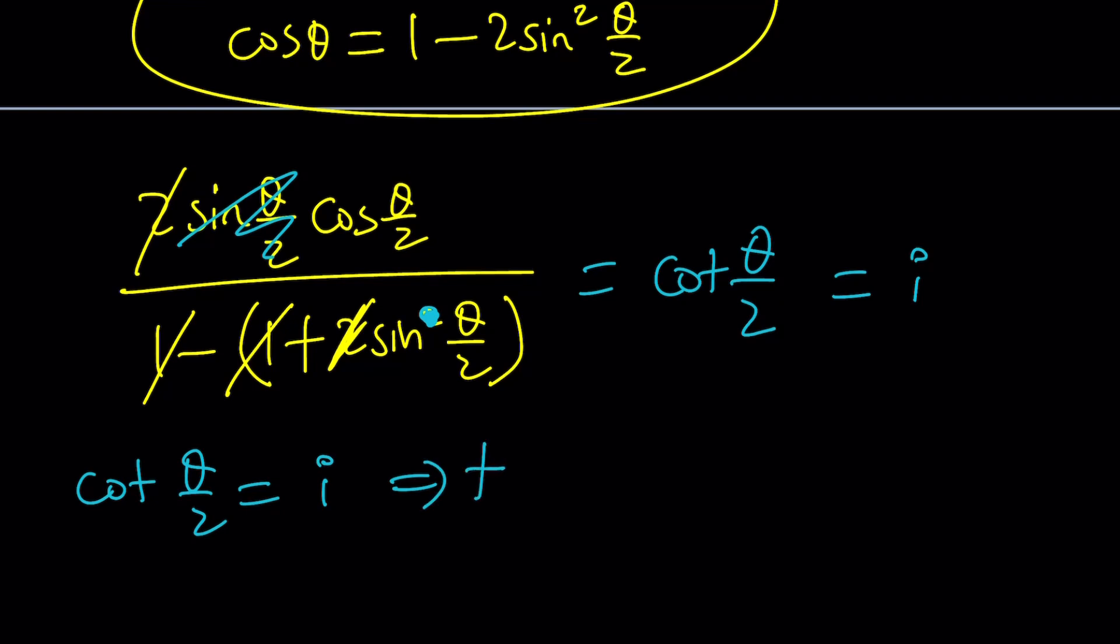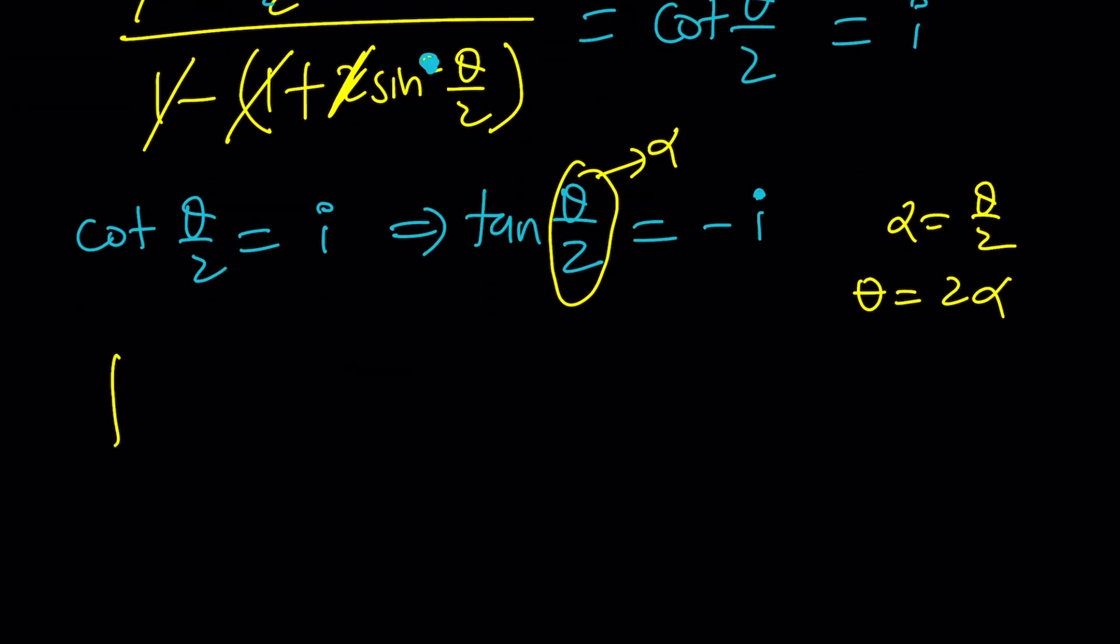Now, watch out. If cotangent is this, what is tangent? Tangent is the reciprocal, it's 1 over i. 1 over i is negative i, by the way. In case you didn't know, you can multiply by negative i. And here's at this point, we got something super interesting. I'm going to go ahead and call this something else, because I don't want to deal with half angles. I don't like them. So I'm going to call this alpha. So here, alpha is θ/2, or theta is 2 alpha. Now let's go ahead and rewrite our equation with alpha. Tan(α) = -i. You'll love this.